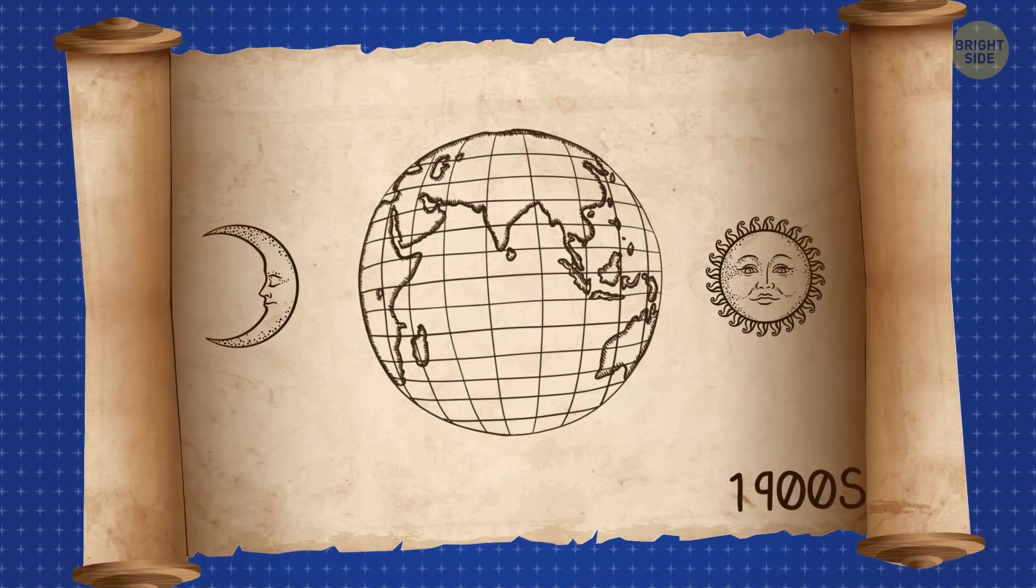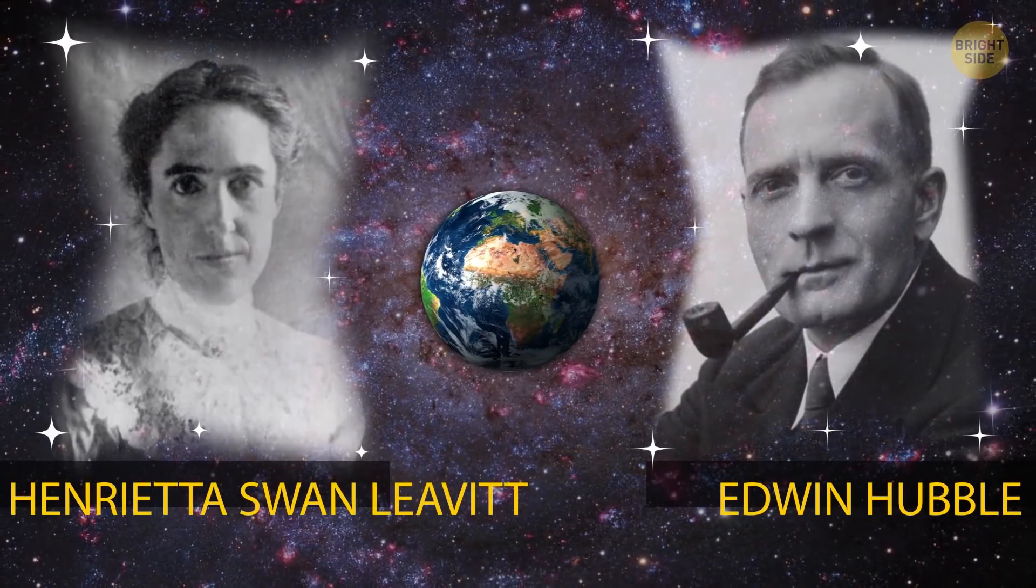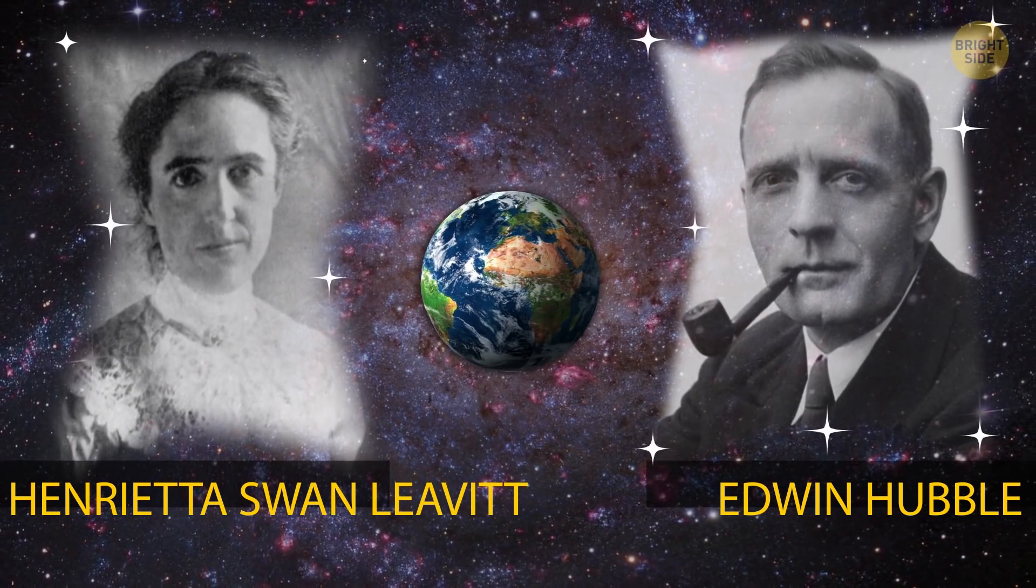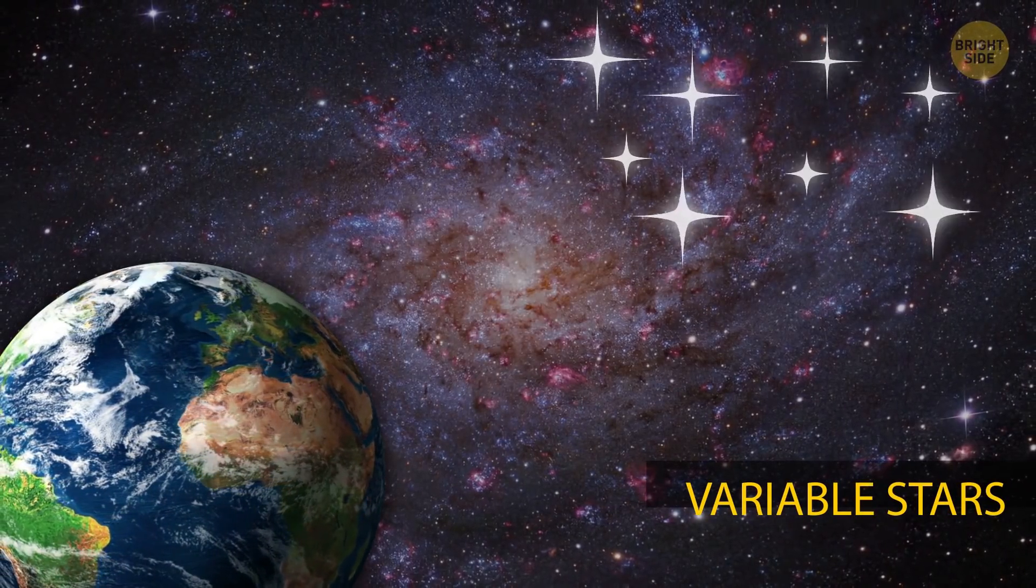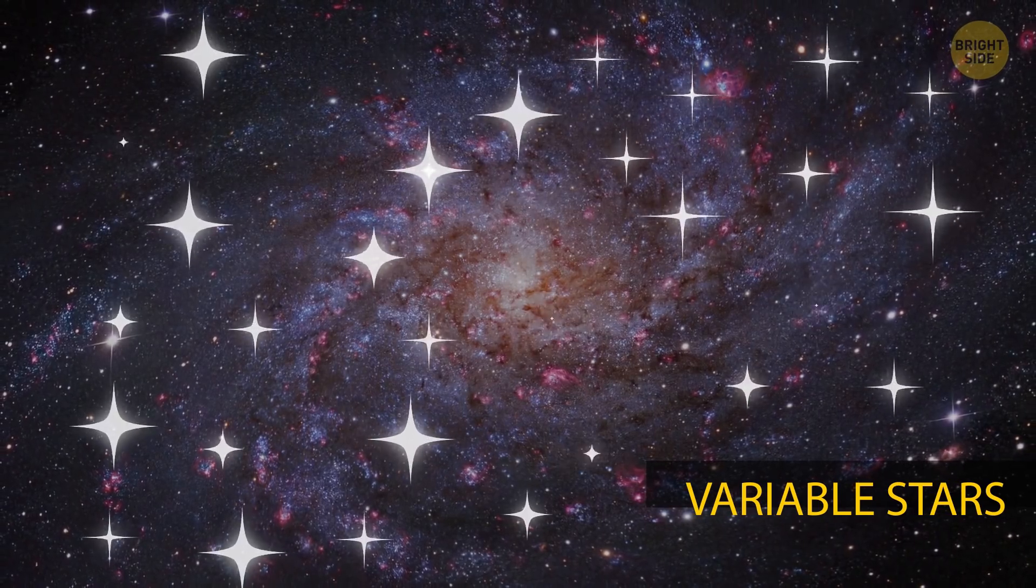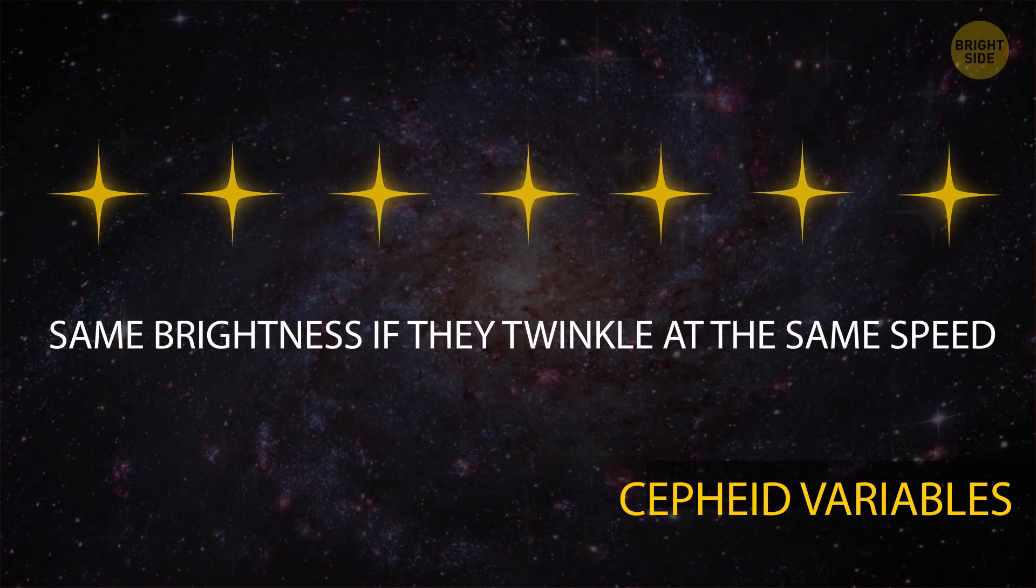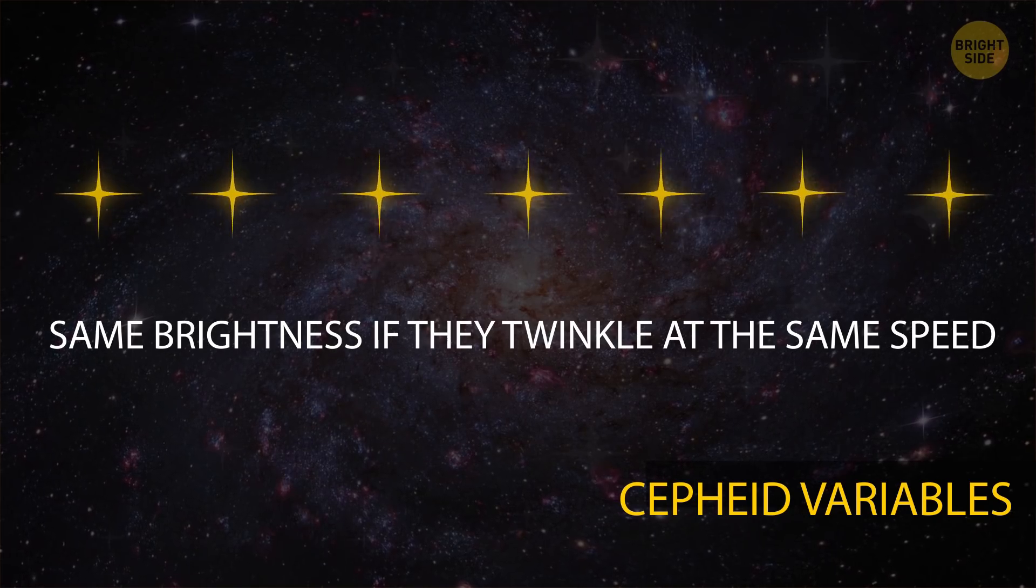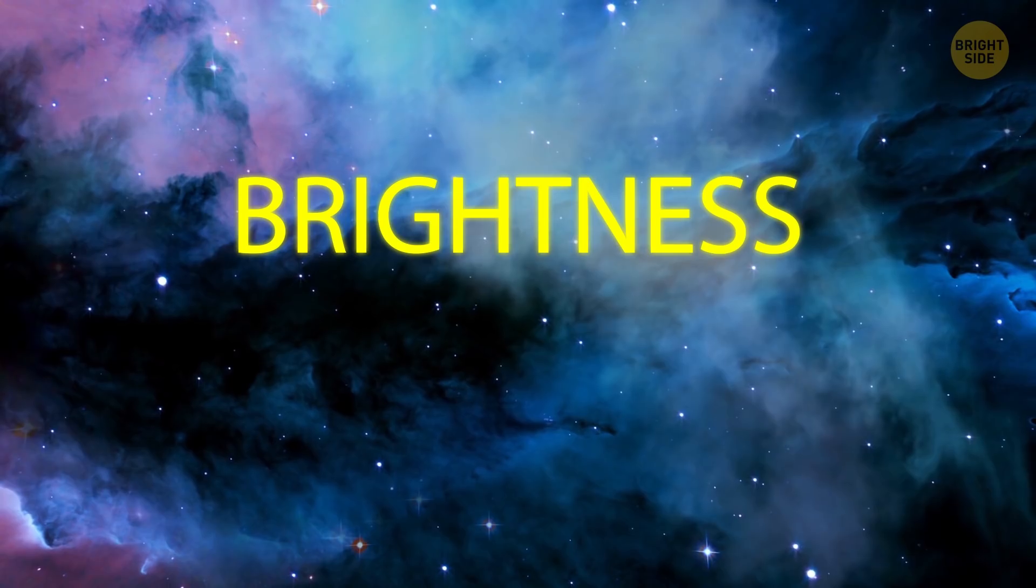This belief didn't change until the 1900s, when scientists like Henrietta Swan Leavitt and Edwin Hubble identified stars whose brightness seemed to change when observed from the Earth. They called these the variable stars. Leavitt had intensely studied thousands of variable stars. She found that certain stars, called Cepheid variables, have the same brightness if they twinkle at the same speed. This discovery proved to be a milestone in measuring the distance of stars and galaxies. It provided a way to relate brightness to distance.